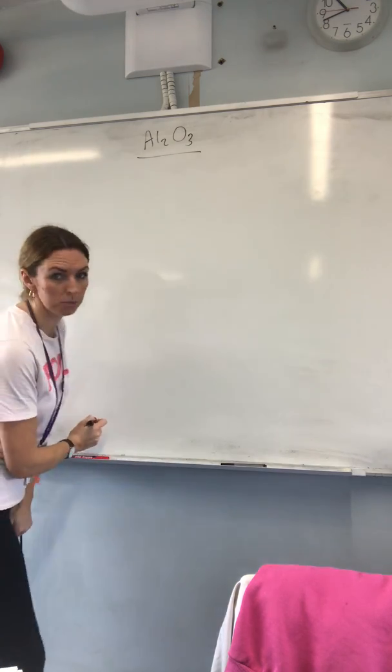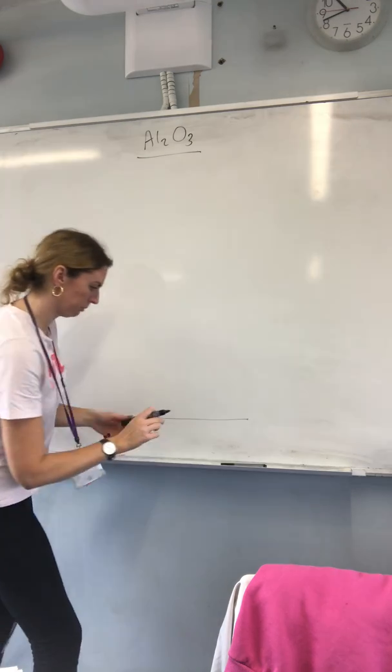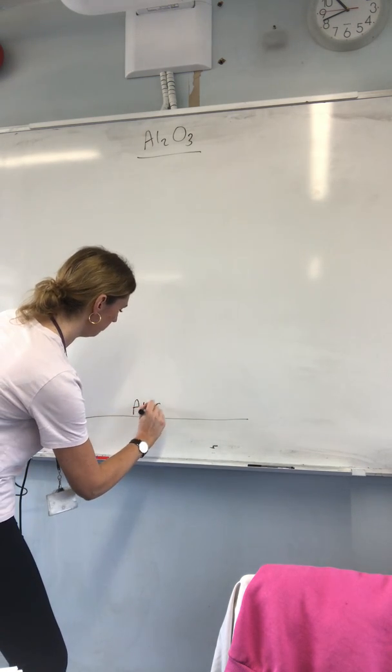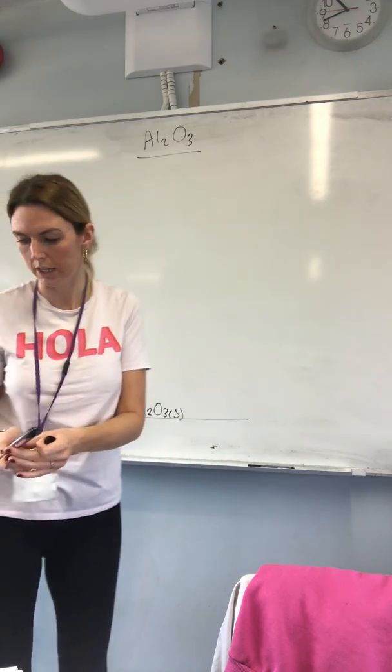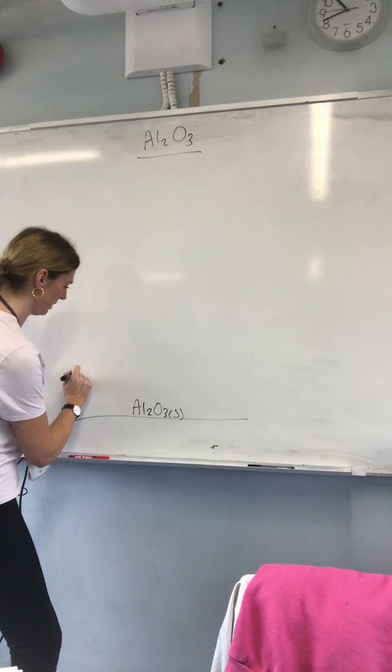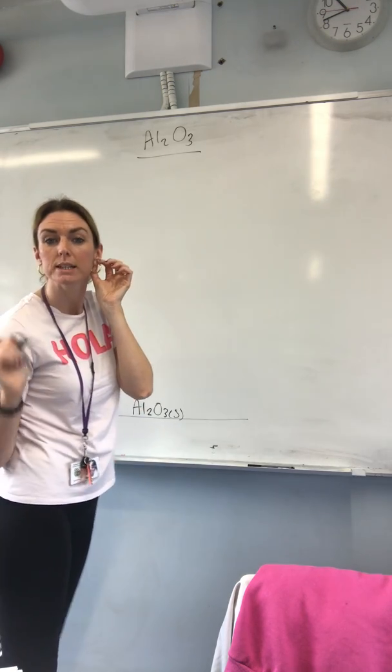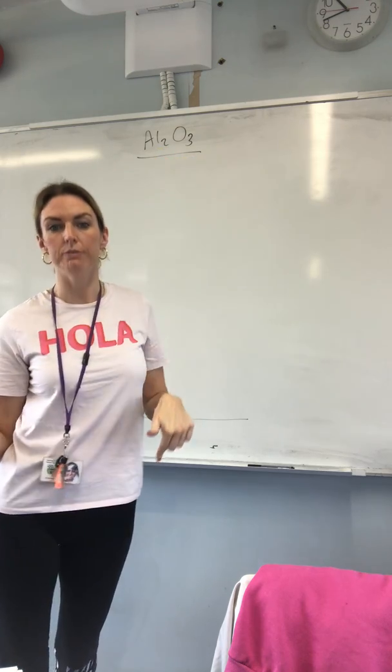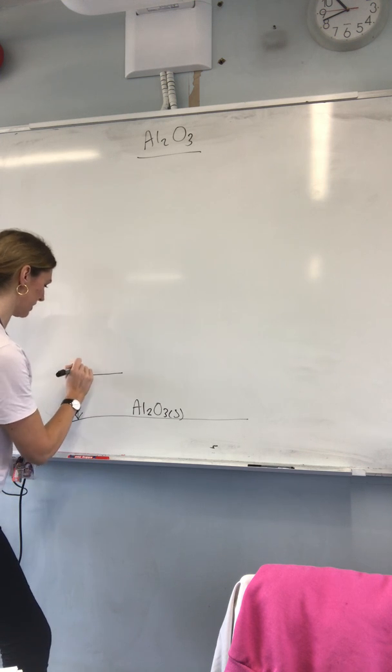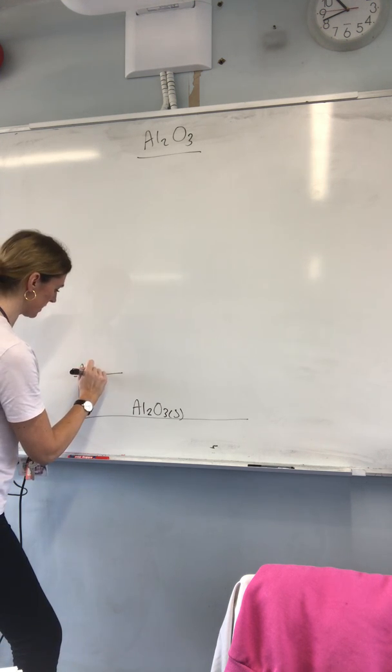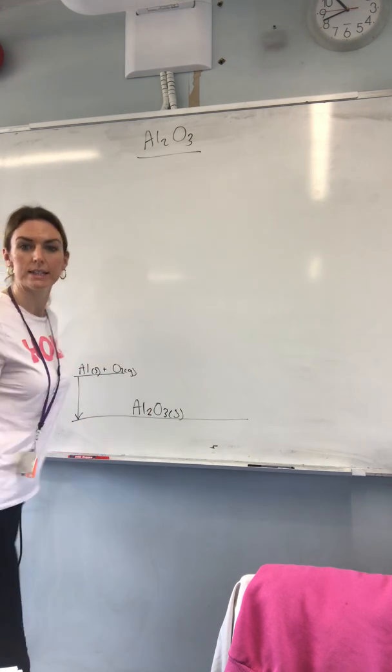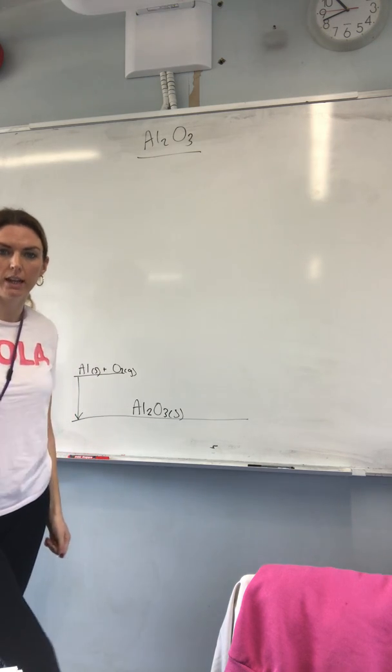Let's start with the bottom line of our cycle where I'm going to put the formula of my ionic compound. Next line up, I'm going to have my elements in their standard states, and then the arrow going down from that is the enthalpy of formation. It is an exothermic process. So I've got aluminium which exists as a solid in its standard state, and I've got oxygen which exists as a gaseous molecule in its standard state.